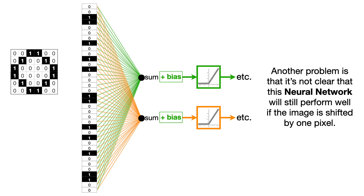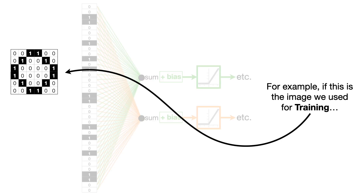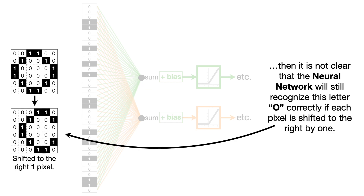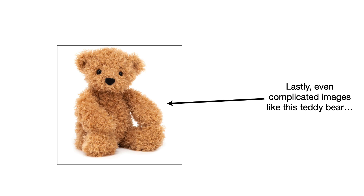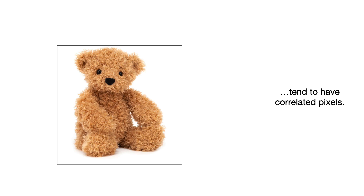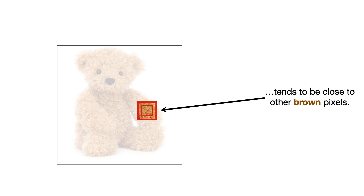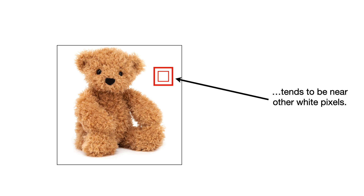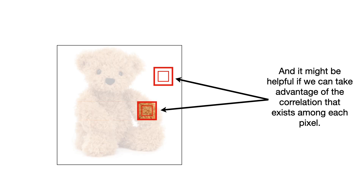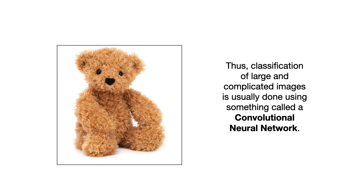Another problem is that it's not clear that this neural network will still perform well if the image is shifted by one pixel. For example, if this is the image we used for training, it is not clear that the neural network will still recognize this letter O correctly if each pixel is shifted to the right by one. Lastly, even complicated images like this teddy bear tend to have correlated pixels — any brownish pixel tends to be close to other brown pixels, and any white pixel tends to be near other white pixels. It might be helpful if we can take advantage of the correlation that exists among pixels. Thus, classification of large and complicated images is usually done using a convolutional neural network.